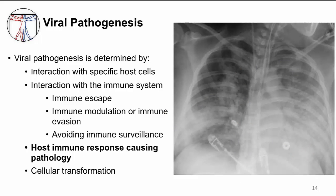An important way viral pathogenesis is determined is by the host immune response alone, which can actually cause pathology. The chest X-ray shown here is of a patient who has acute lung injury — specifically acute respiratory distress syndrome, or ARDS. This happens because of a runaway immune response from a large number of pro-inflammatory cytokines, which recruit immune cells to the airways, increase swelling, and fill the airways with cellular debris and fluid, causing respiratory failure. Certain respiratory viruses can induce this clinical picture, such as the 2009 pandemic H1N1 and the SARS coronavirus.